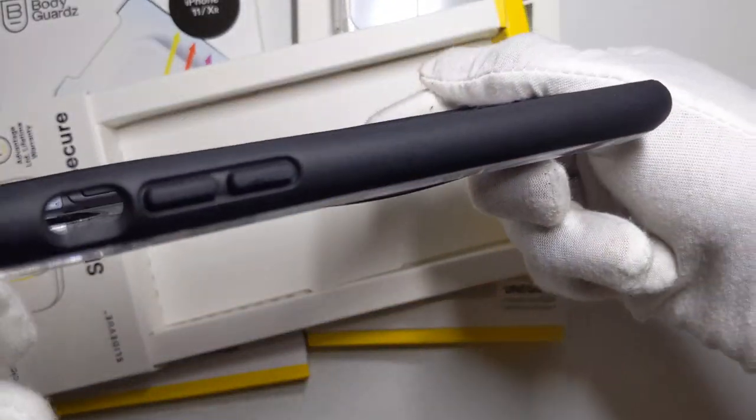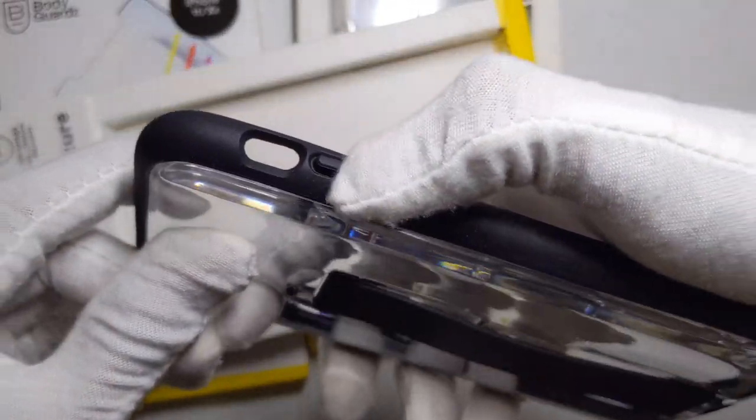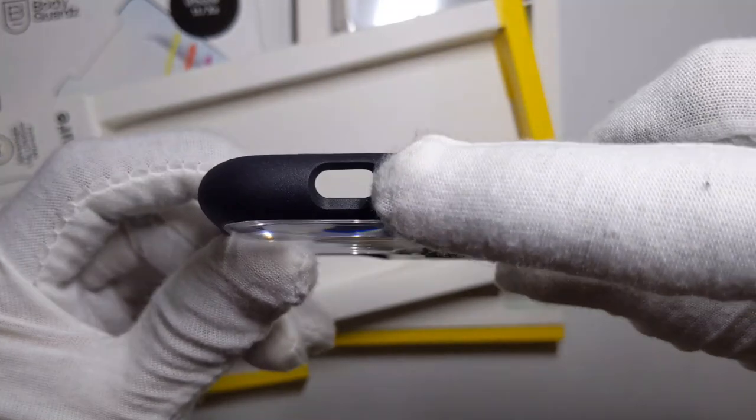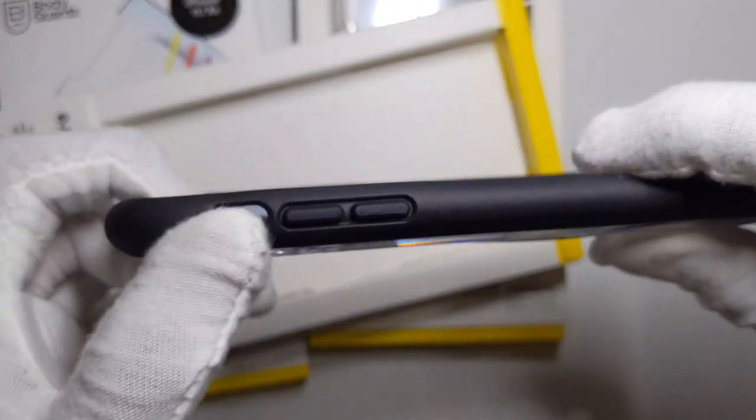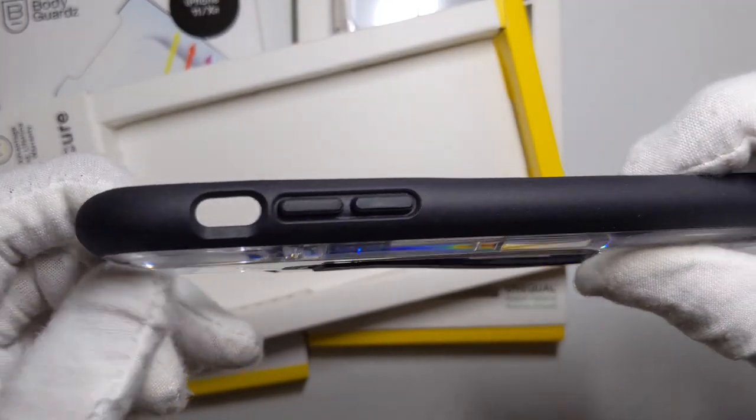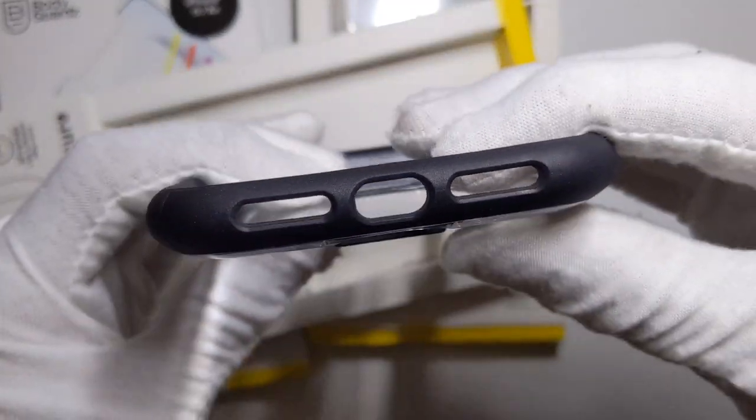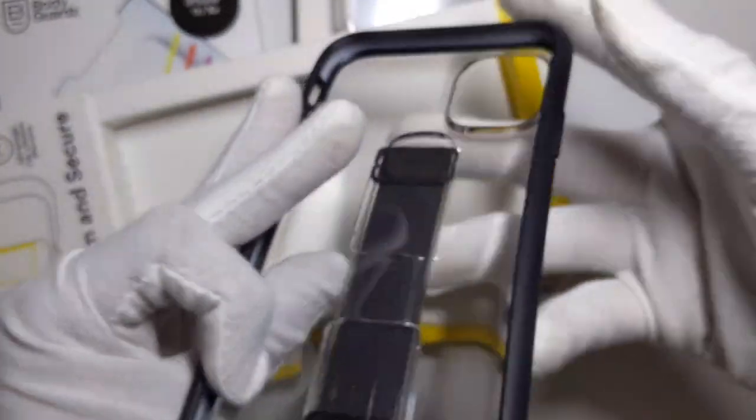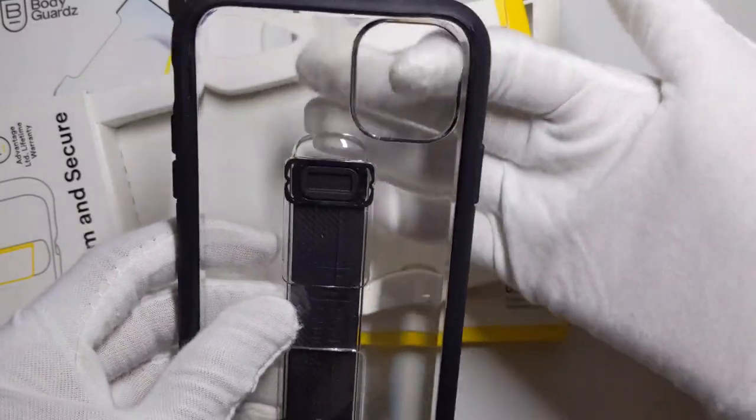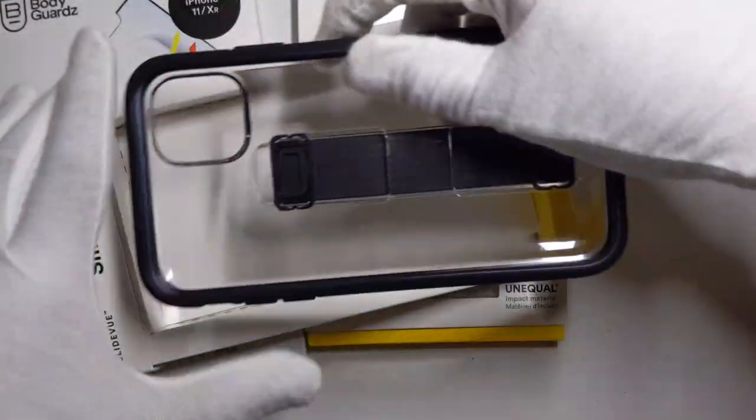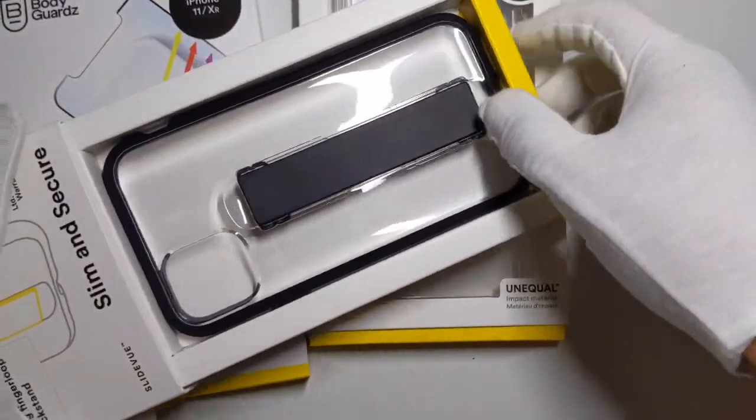It looks really nice, I'm really digging the inside. You have nice tactile buttons and a cutout for the volume, silent, and ringer. Then you have cutouts for the charger and speakers, cutout for the camera, it's a full cutout. Now we're going to get into the other cases real quick, let's put this to the side.